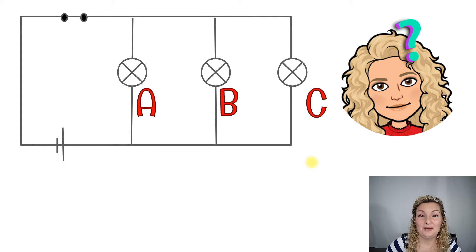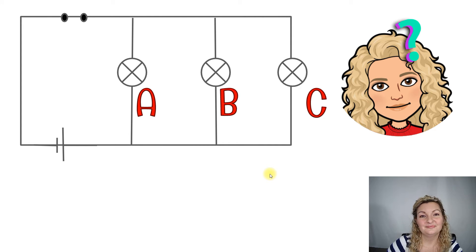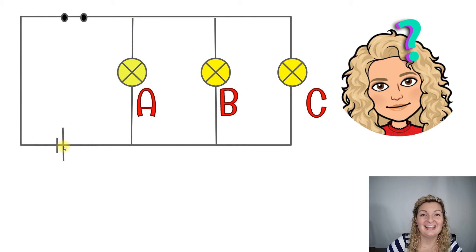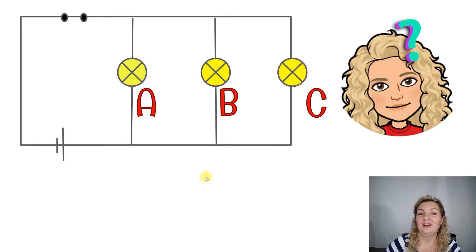This time, we're doing a parallel circuit. Think about your answer — you can pause it. Let's check it out. So they are all, in fact, going to be lighting up. This is a parallel circuit, and if you see our battery, it goes around and every single branch has a closed circuit. So we have a closed switch, and everything's going to be receiving electricity, so they will all turn on.